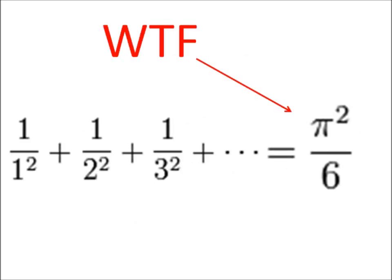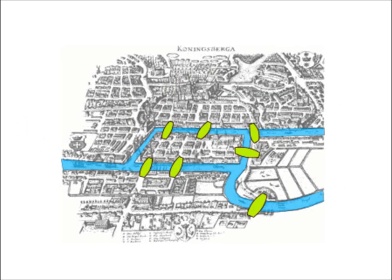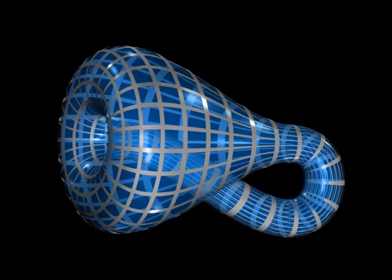At 28 he solves the Basel problem, goes blind in one eye, proves he can't cross all the bridges of Königsberg once and only once, responds topology and graph theory.